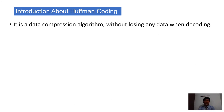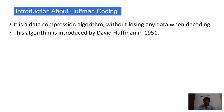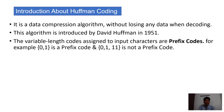What is Huffman coding? It is a data compression algorithm or method without losing any data. When a user decodes the message, they get the exact information and there is no loss of any information. This method was introduced by David Huffman in 1951. The variable length codes assigned to input characters are prefix codes.